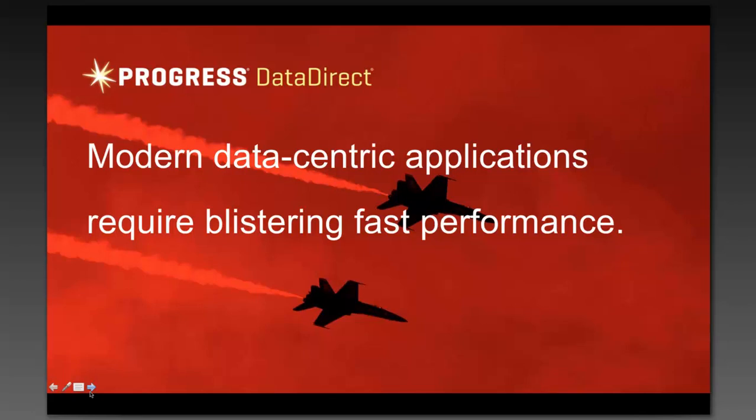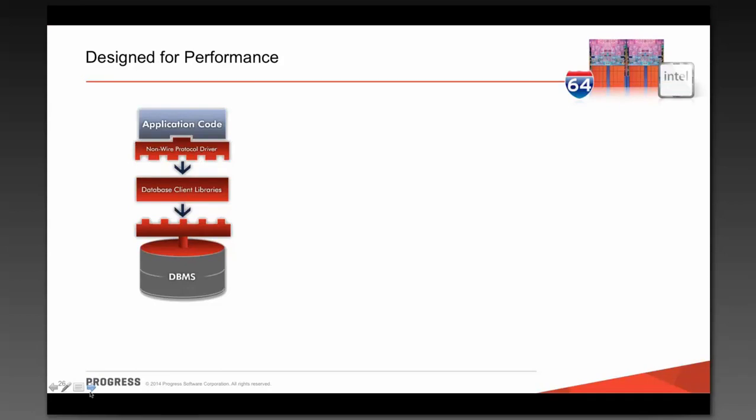Now we're getting more into what's happening in the industry around performance, and we're going to dive a little deeper into architecture and how we design our software for performance. When we talk about designing for performance, one of the first things my engineers do in the performance lab is count the number of calls through the stack from the time the application gets to us until we exit our piece of software and send a request over the socket. Database drivers sit right on the socket — they're the last thing you go through before you communicate to the database. The way we used to develop it was building a driver shim on top of client libraries, which then did a translation before getting to the database.